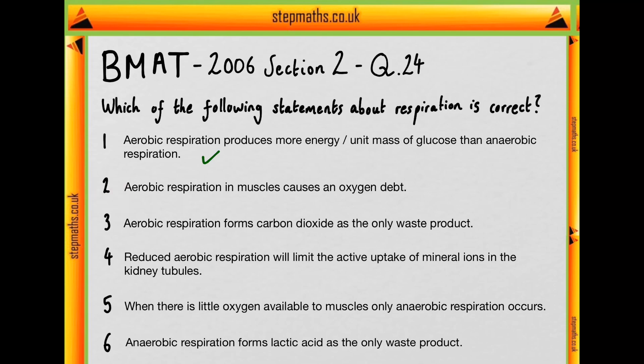Moving on to two: aerobic respiration in muscles causes an oxygen debt. Well that's not true. Aerobic respiration uses oxygen. An oxygen debt is generated when there's not enough oxygen to mediate aerobic respiration and therefore anaerobic respiration is opted for. When there's anaerobic respiration there's an oxygen debt, which is repaid by mediating a reduction in the amount of lactic acid generated from anaerobic respiration as a byproduct.